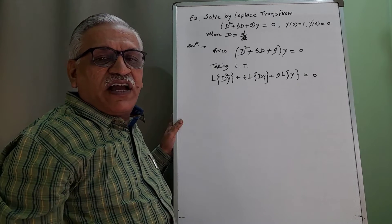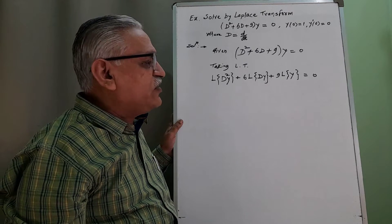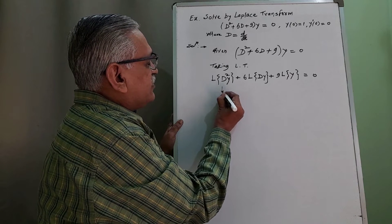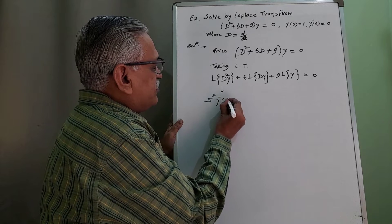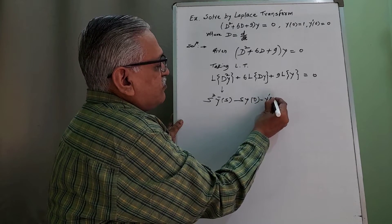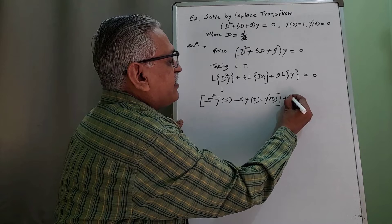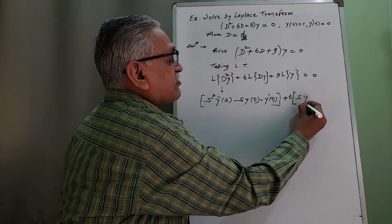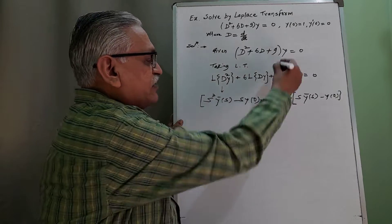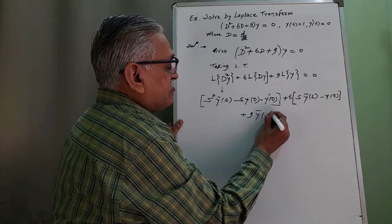I have already discussed the results to find the Laplace of a derivative — I will provide the link to that video in the description box, please watch it. The Laplace of the second-order derivative is s²ȳ(s) − s·y(0) − y'(0). The Laplace of the first-order derivative is sȳ(s) − y(0). Adding 9·ȳ(s) gives the full left-hand side equal to 0.